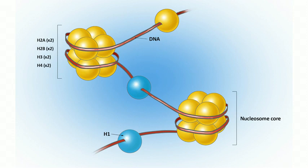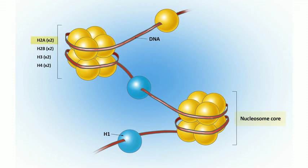DNA is really long, so to pack it into the nucleus it exists in a super-condensed form called chromatin — basically DNA and specialized proteins called histones. Eight specific histone proteins come together, and the DNA strand wraps around them twice. That unit is called a nucleosome, which consists of a core of histones with DNA wrapped twice around it.